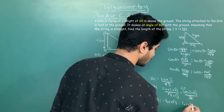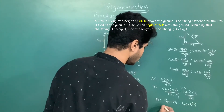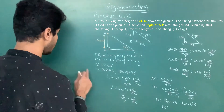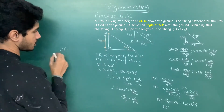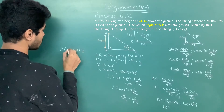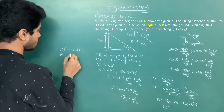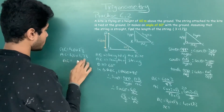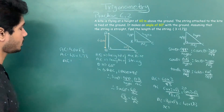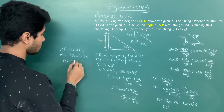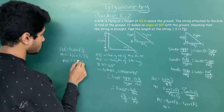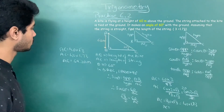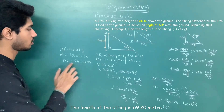Multiplying 40 by root 3, and root 3 equals 1.73, so 40 times 1.73 gives 69.20. Therefore the length of the string is 69.20 meters.